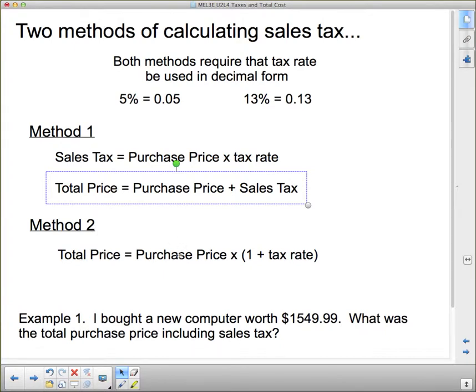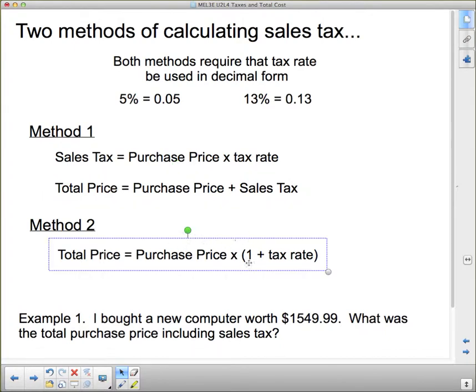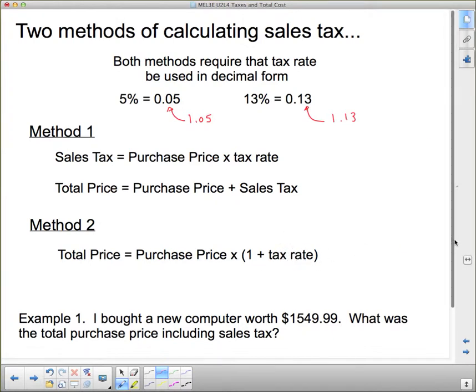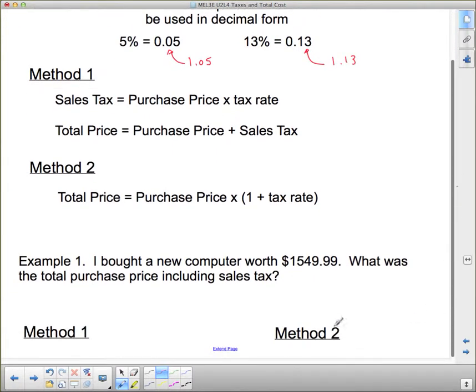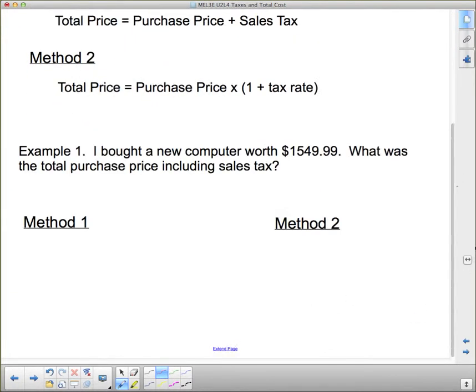Method two is total price equals the purchase price times one plus the tax rate. One plus the tax rate may sound confusing, but one plus the 13% tax rate would just be 1.13, and one plus the 5% tax rate will be 1.05. So you just stick a one where that zero is. We're going to look at a few examples and calculate it with both methods.